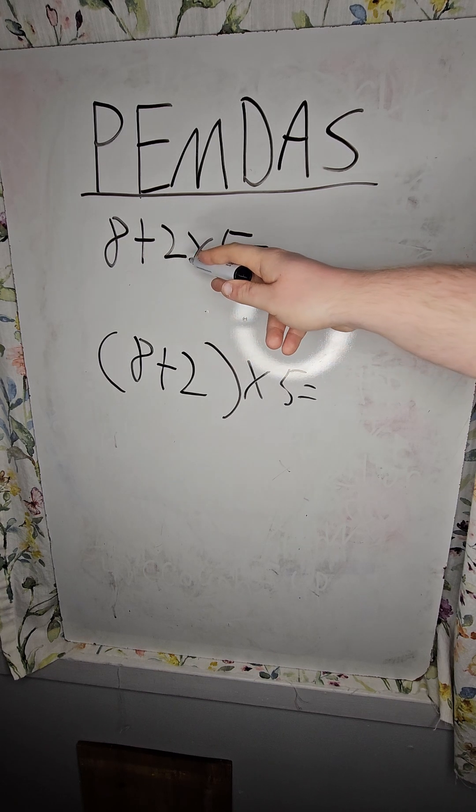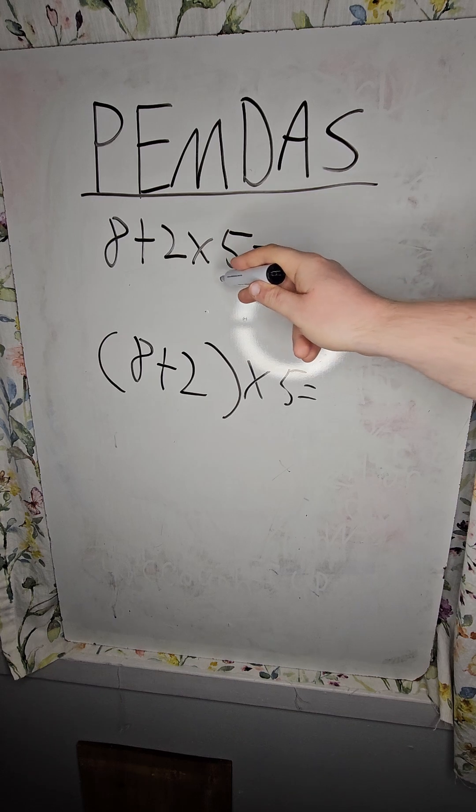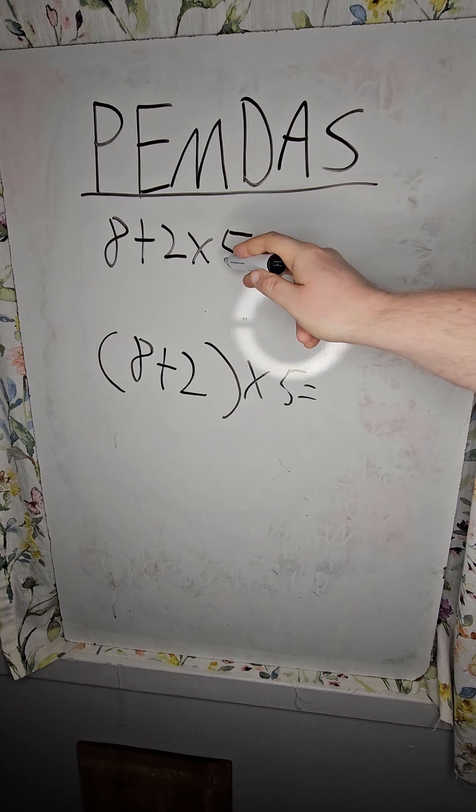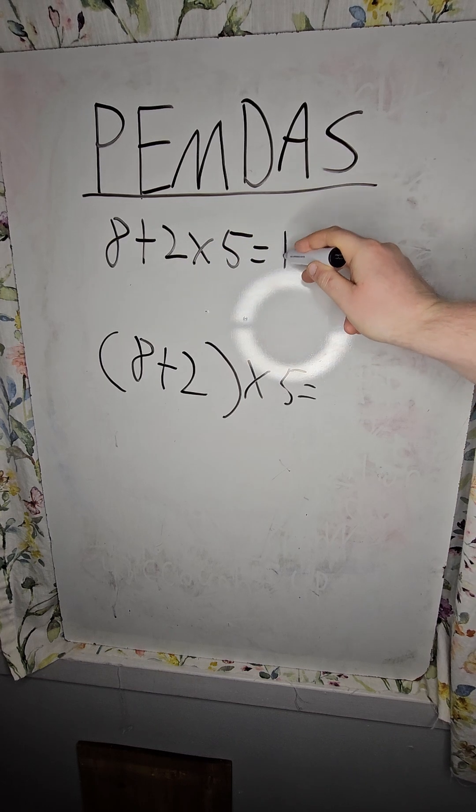In this case, 8 plus 2 times 5 equals? Because multiplication comes before addition, we do this first. So 2 times 5 is 10, plus 8 is 18.